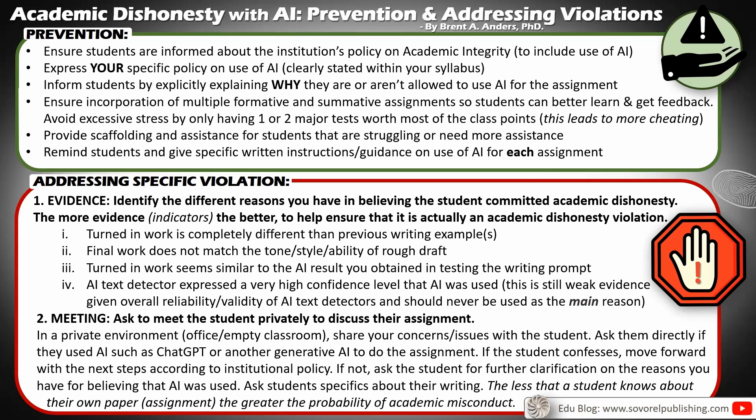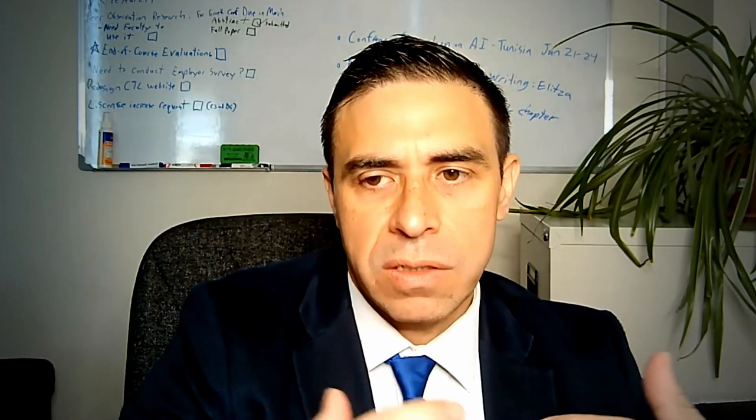When you're asking them questions about the content of their work, if they don't know roughly anything about what's in their paper, the less that they know, the more likely it is that someone else wrote the paper for them. So that's something to keep in mind as well. That's a breakdown of things to consider, things to identify and address when talking about academic dishonesty with the use of AI, and different things we can do to prevent this situation from happening, as well as how to actually address a violation or the possibility of a violation.